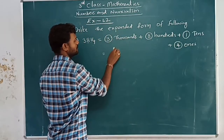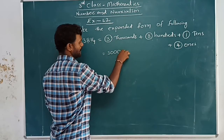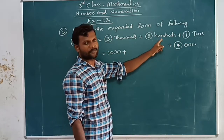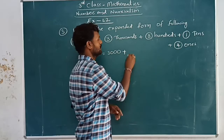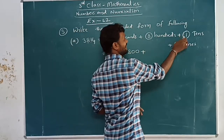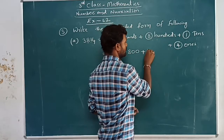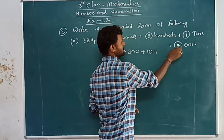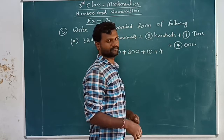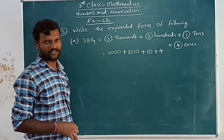So how we can write it: three thousands — three is in thousands place, so three thousands — plus eight hundreds, plus one tens, plus four ones. Four ones are four. Like this, we have to write the expanded form of the numbers.